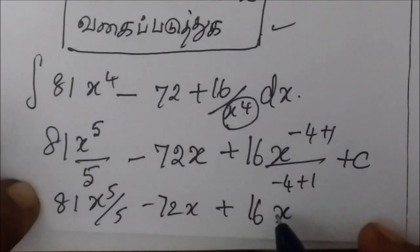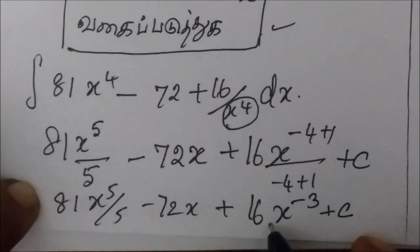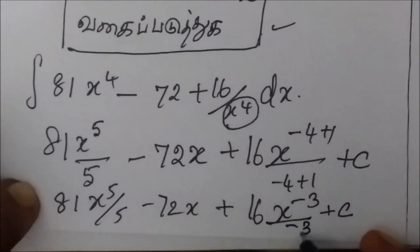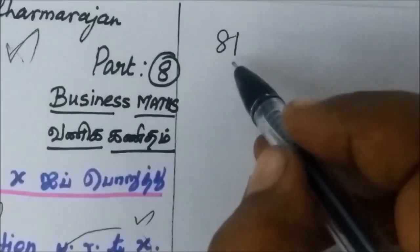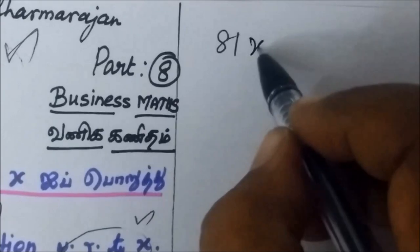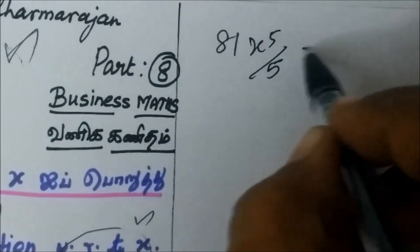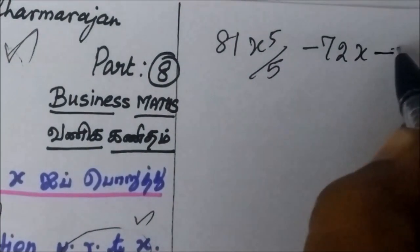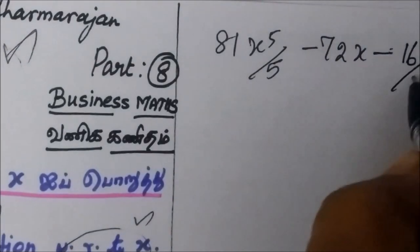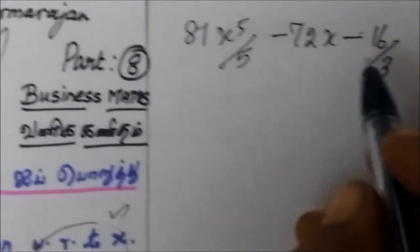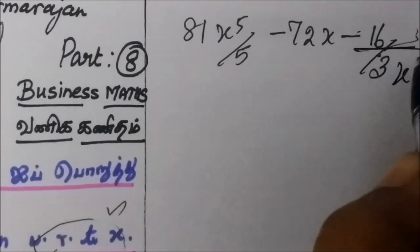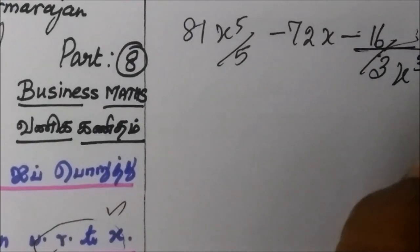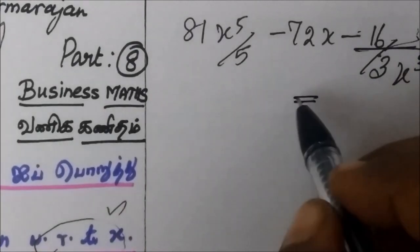Adding 1 by minus 3, the final answer is 81x to the power 5 by 5 minus 72x minus 16 divided by 3x to the power 3, plus C. This is the final answer.